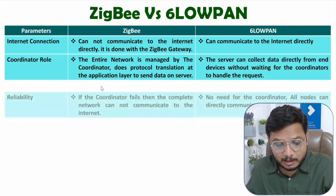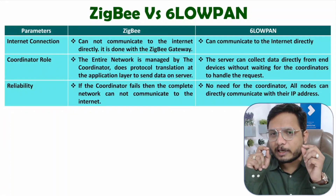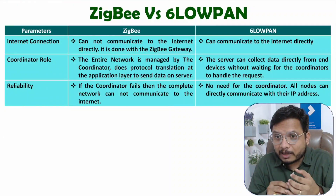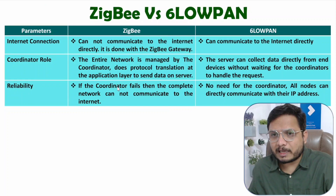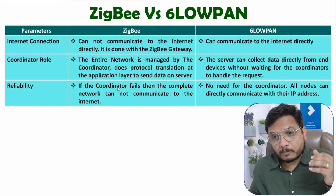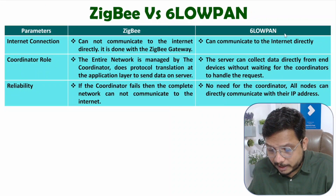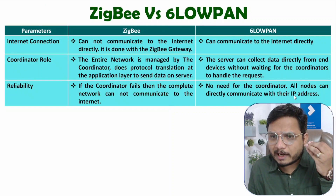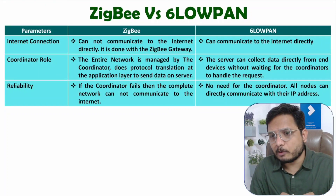The next parameter is reliability. ZigBee reliability is purely based on the coordinator. If the coordinator fails, the entire ZigBee network cannot communicate to other networks. So a single point of failure is possible in a ZigBee network. While in 6LoWPAN, you don't need a coordinator — all nodes communicate directly with their IP address. Even if some nodes fail, communication is still possible. So there is no single point of failure with 6LoWPAN.